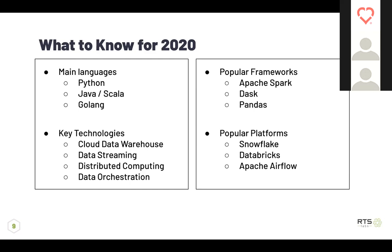Another big one is distributed computing — the idea that you're not just running a single process on a single server, but splitting that job out across multiple servers so it can take advantage of a bigger resource pool. Frameworks like Apache Spark and Dask have the ability to spin up a cluster of a thousand servers and process a terabyte of data with relative ease. Distributed computing is getting better and better, and that framework is essential for bigger workloads.